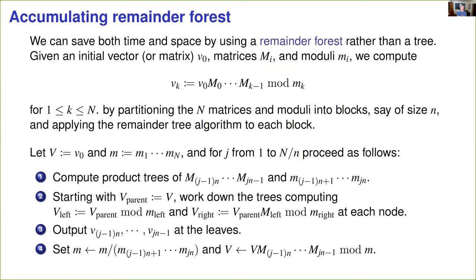This not only saves space, but this also saves time. So our strategy is we're going to break our sequence of matrices and our sequence of moduli up into blocks, say of size little n, and we're going to run the remainder tree algorithm on each block, and we're going to pass information from one tree in the forest to the next using a vector, and that vector will start out as our initial vector V0, and then at each, as we go through each tree in the forest, we're going to multiply it by the product of all the matrices in that tree, which appears at the root of the product tree.